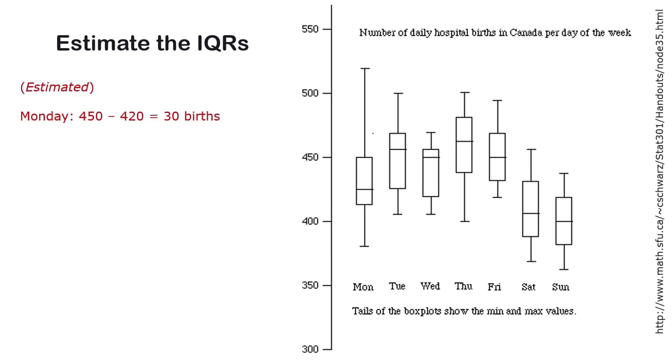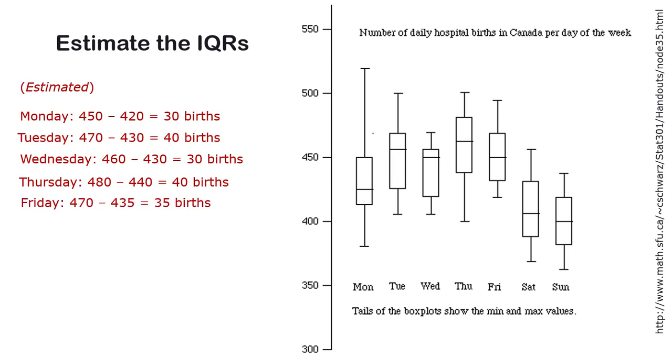So, figure these out. Monday, I'm estimating by eyeballing things, I could be wrong. Looks like it's about 30 births because it looks like the box on Monday goes from about 420 to 450. Tuesday, looks like it's about 40 births. Wednesday, looks like about 30. Thursday, looks like about 40. And Friday, looks like about 35. So, it looks like Tuesday and Thursday are in a toss-up for the most variability. But there's not a huge difference in the variability between the days for any of those.